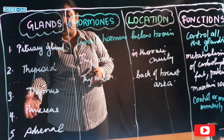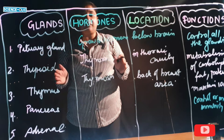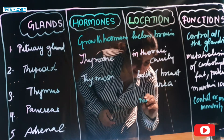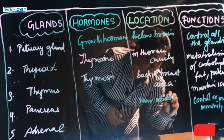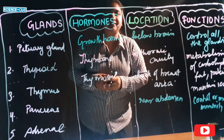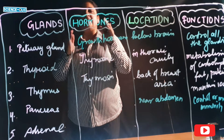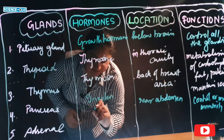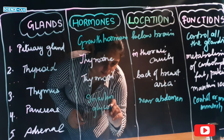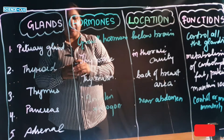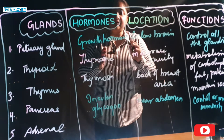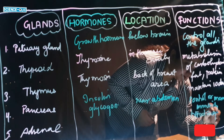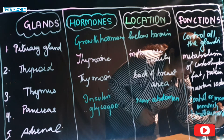The pancreas is a leaf-like structure present near the abdomen. It secretes insulin and also secretes glucagon. Its main function is to control the blood sugar level.